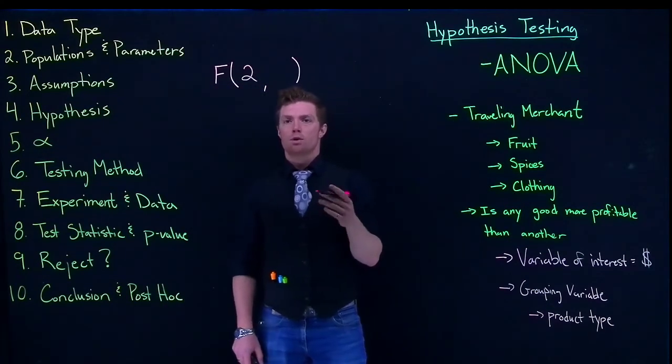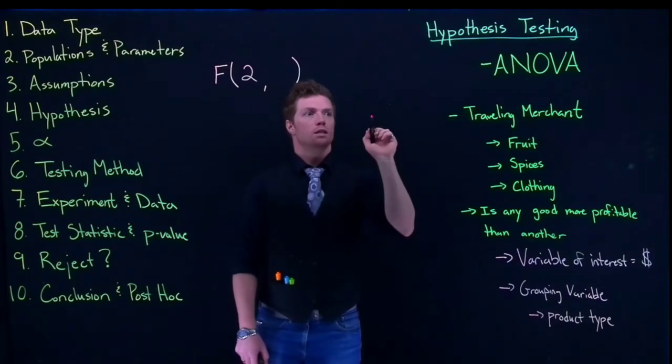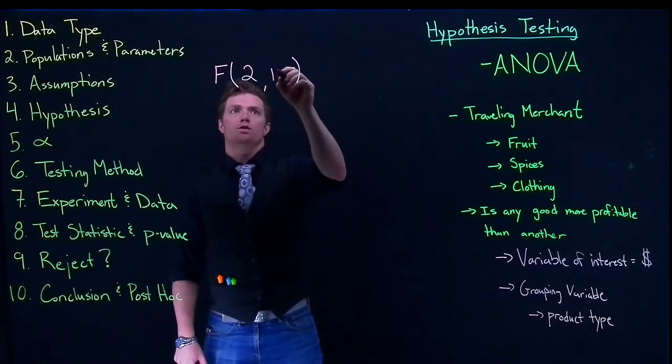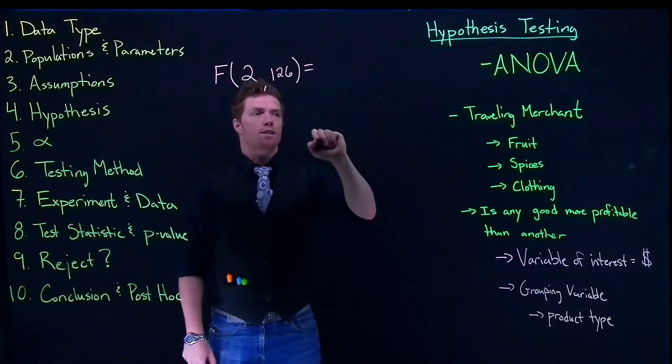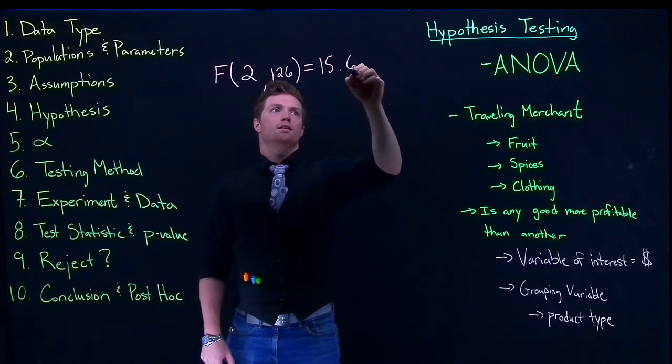And then we need to have the number within groups, which is just the sample size minus the number of groups that we have. So let's suppose for this one it's just like 126. And when we get this we get some value and let's suppose that this is going to be like 15.69.